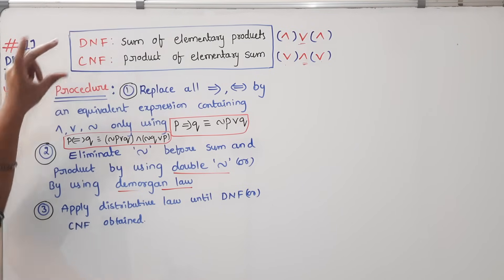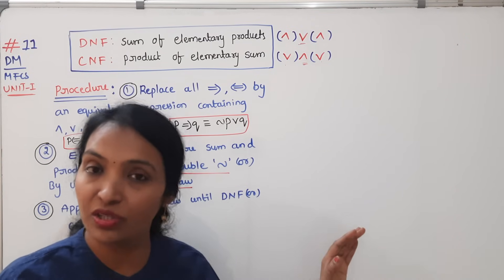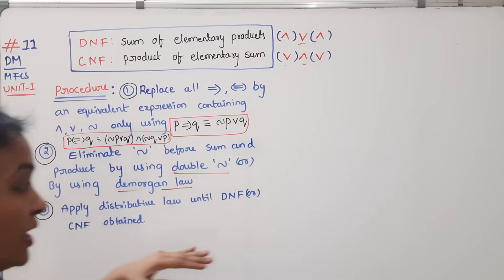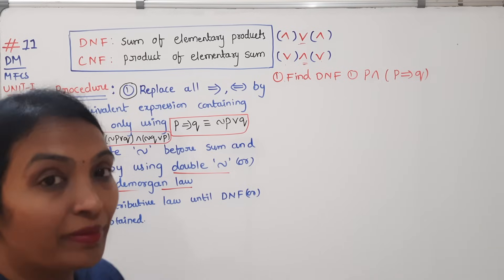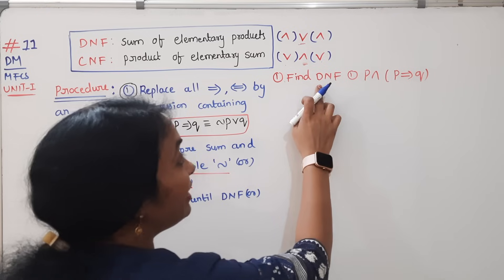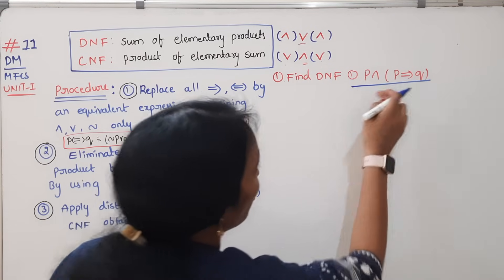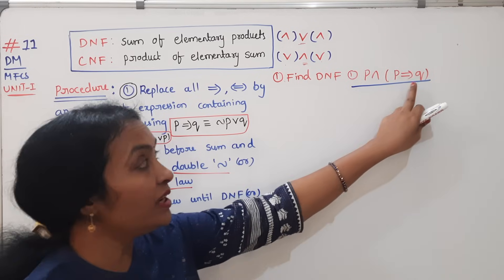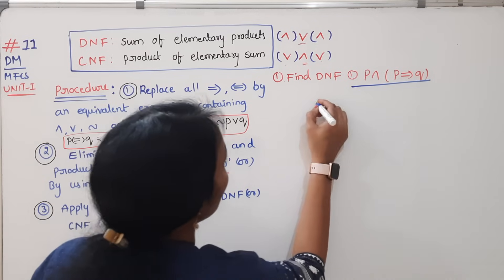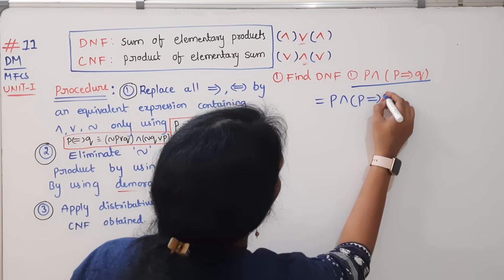DNF and CNF. Now we do the problems. The first problem: find the Disjunctive Normal Form. The given compound statement or logical expression is: P and (P biconditional implies Q). The given statement is P and (P implies Q).